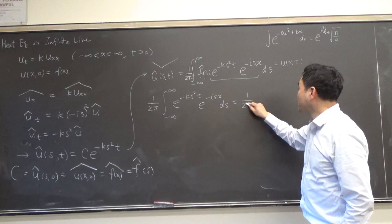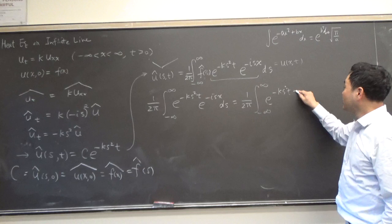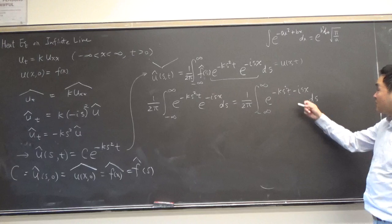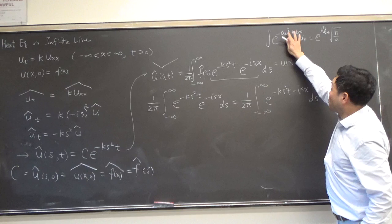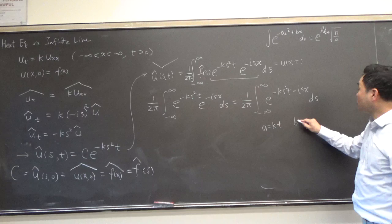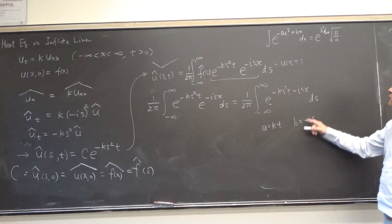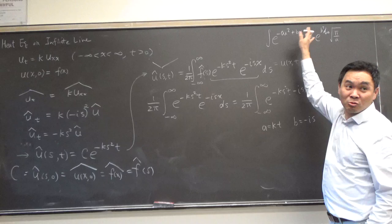All right, so let's figure out the inversion of only the Gaussian part. Now this is going to be 1 over 2 pi. You can put these two together and you get e to the negative k s squared t minus i s x ds. And that's exactly the same as this one, right? Except since you're integrating with respect to s here rather than x. So think of this x squared as s squared here so that a is really k t. Is that okay? A is k t. And then b is equal to negative i x, right? And we worked really hard to get this result last time.